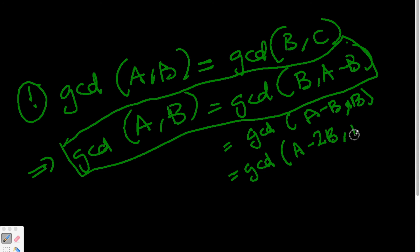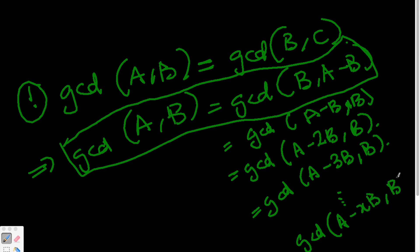You get gcd(A-2B, B) and gcd(A-3B, B) being the same thing. So you go on doing this so on and so forth till A-xB comes up, where A-xB has to be positive.